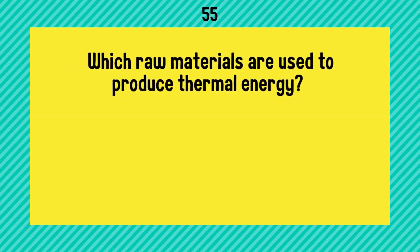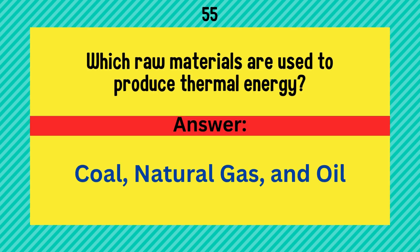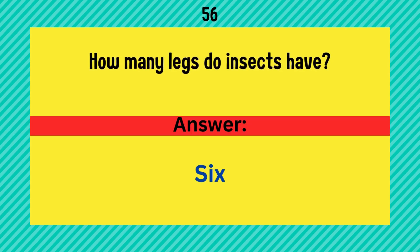Which raw materials are used to produce thermal energy? Coal, natural gas, and oil. How many legs do insects have? Answer is 6.